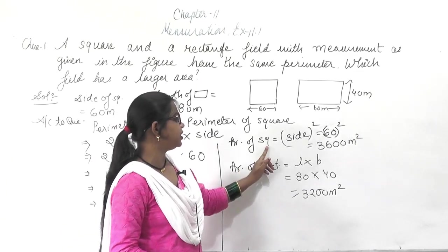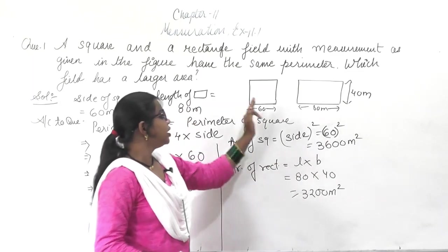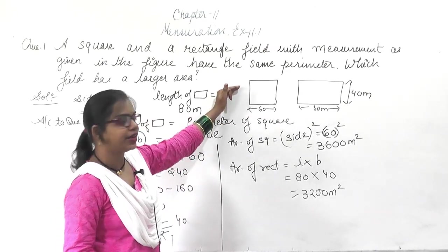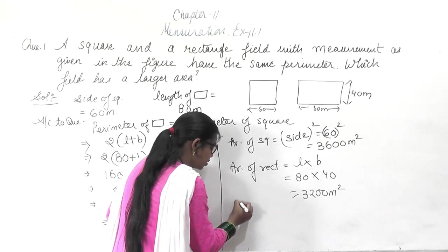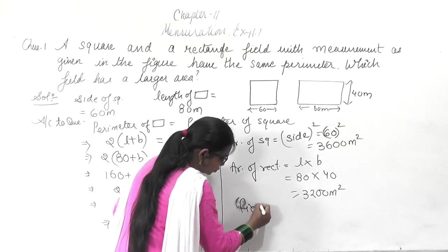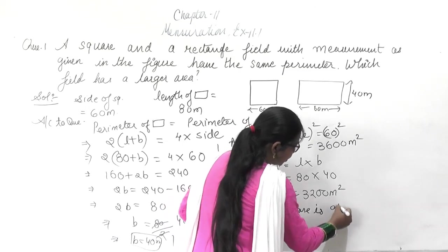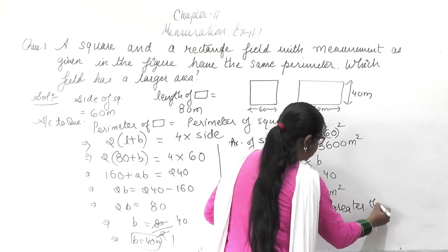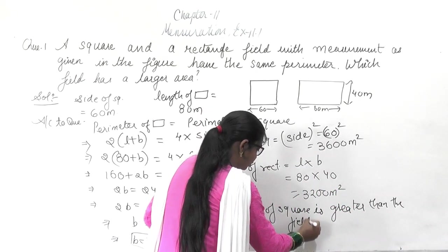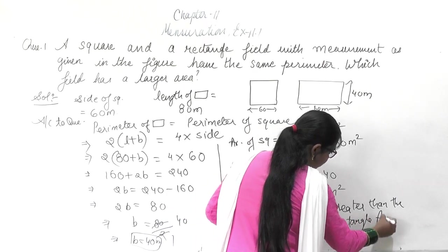From here you can find out which field has the larger area. The area of the square is greater than the area of the rectangle. Therefore, the field of the square is greater than the field of the rectangle. This is the answer.